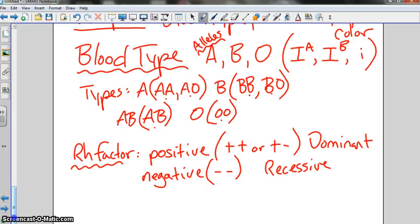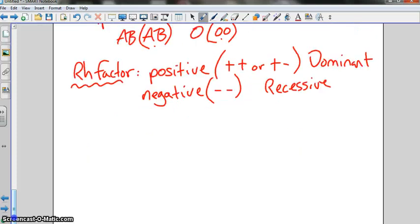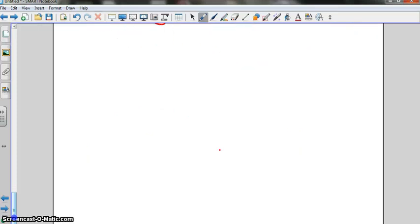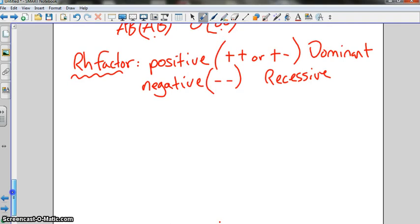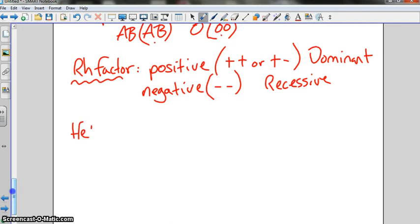And guys, multiple allele traits are not that complicated. They're just like others. The only difference is you've got an extra or two alleles. So, for example, let's do a Punnett square. Let's do somebody who is heterozygous type A. And let's say they have children with somebody who is type AB.